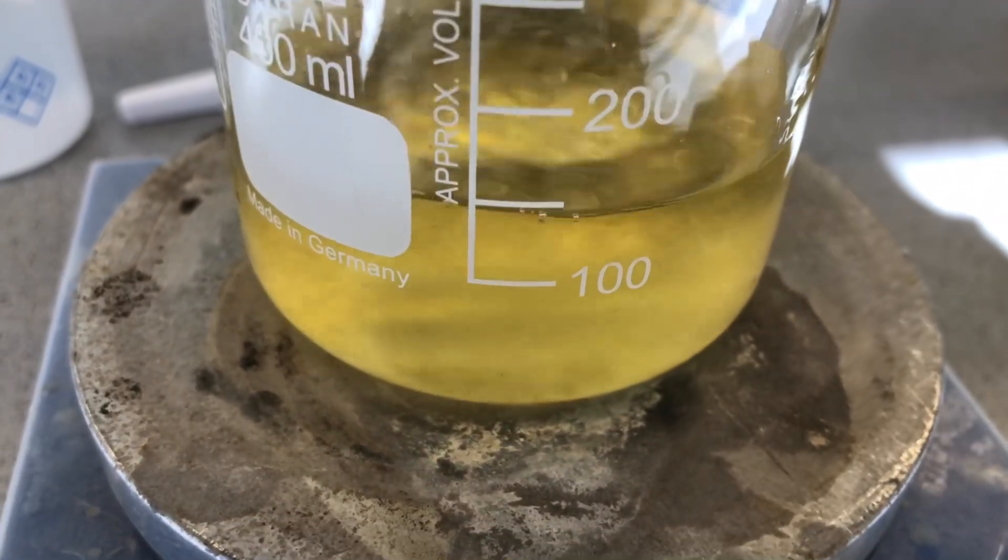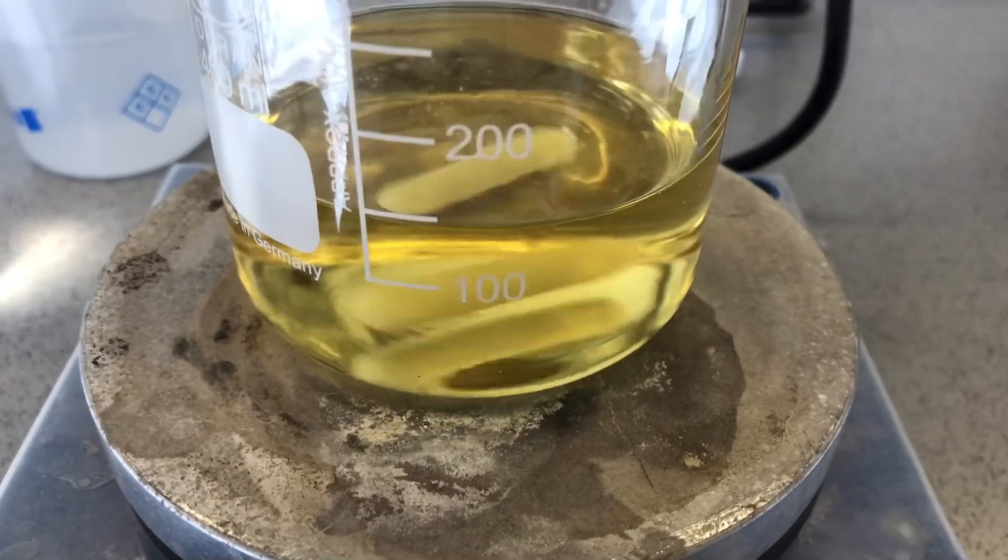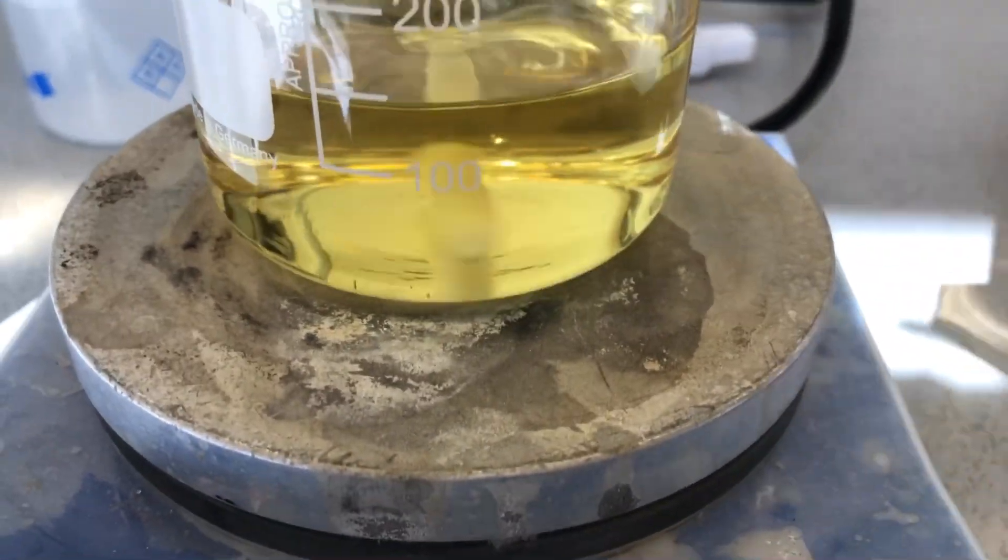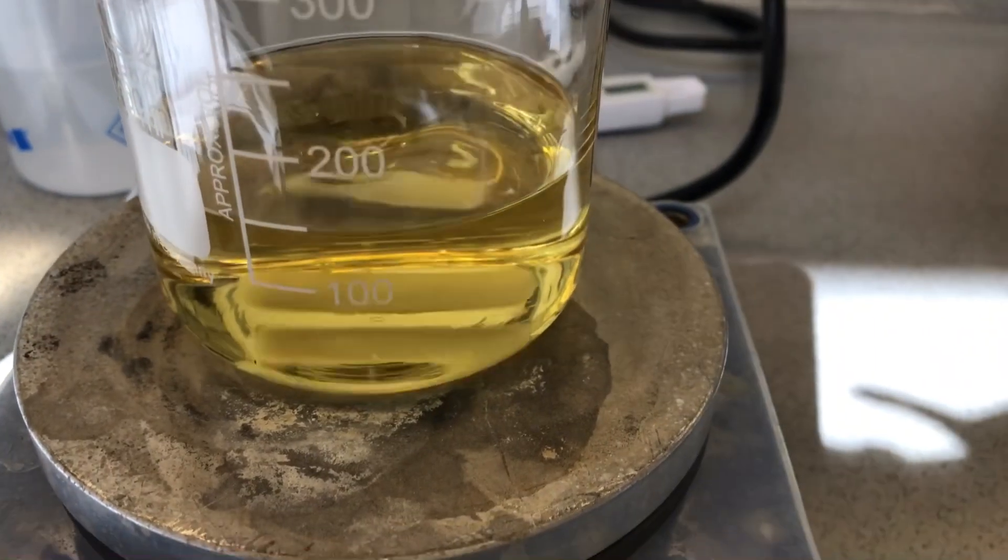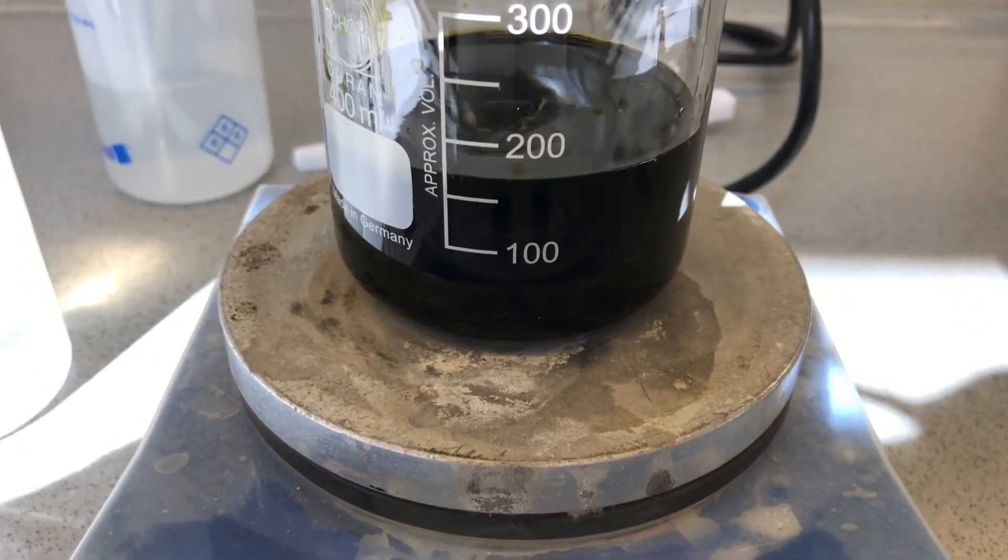About 45 milliliters of water were added while stirring. 18 milliliters of 2-molar sodium hydroxide solution were weighed out and the magnetic stirrer was turned on. When the sodium hydroxide solution is added, you immediately see this color change.